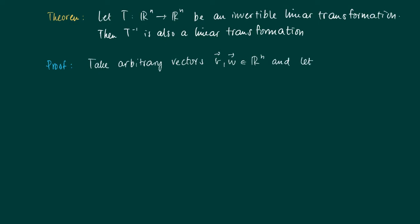the vector X be the inverse of V, so it is T^(-1)(V), and Y is the inverse of the vector W. Well now we have the following: